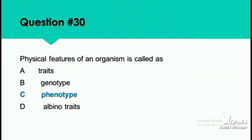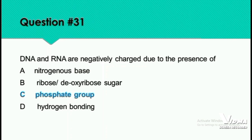Question 30: The physical feature of an organism — we have read that genotype is our collection of genes, traits are specific characteristics of an individual, and phenotype refers to our physical features such as height and weight. Question 31: DNA and RNA are negatively charged due to the presence of the phosphate group — option C is the right answer.